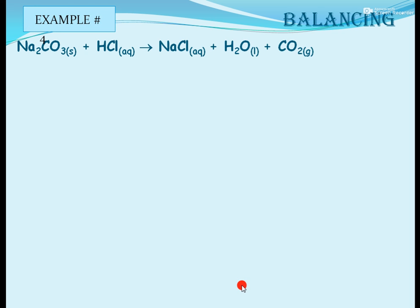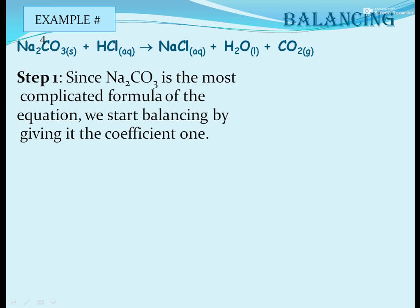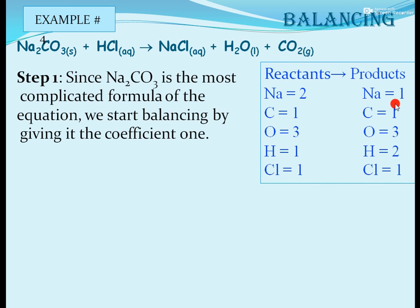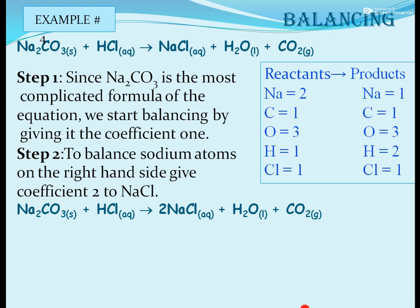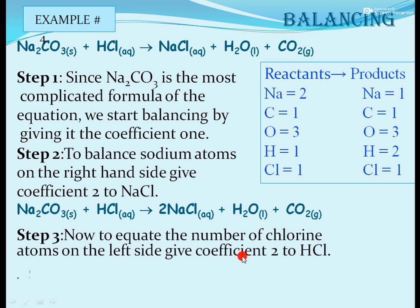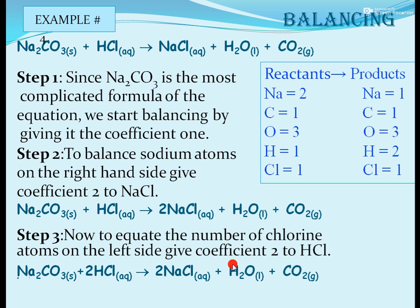Example 4: Na2CO3 + HCl → NaCl + H2O + CO2. Sodium atoms are not balanced. Since Na2CO3 is the most complicated formula, we start by giving it coefficient 1. To balance sodium atoms, we put coefficient 2 in front of NaCl. This makes chlorine 2 on the product side and 1 on the reactant side, so we put coefficient 2 in front of HCl. Now all atoms — hydrogen, chlorine, carbon, oxygen, and sodium — are balanced.